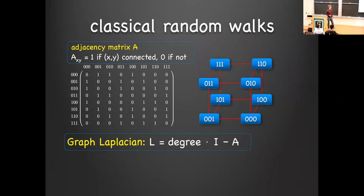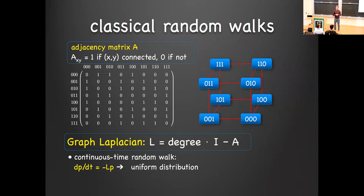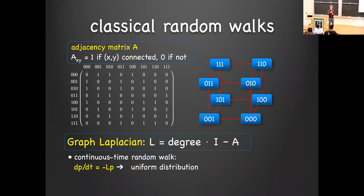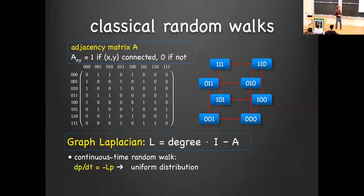One nice feature of the Laplacian is that it's the right object for defining a continuous-time random walk. I have a probability distribution over all the vertices, and as time evolves according to a Poisson process I jump to an adjacent vertex. From each point, probability is flowing out to adjacent vertices, so each point loses probability at a rate proportional to its degree and gains probability from all its neighbors, giving rise to a differential equation. This converges to the uniform distribution on a connected graph because the Laplacian has all non-negative eigenvalues and a unique zero eigenvector — the uniform distribution — while everything else exponentially decays.